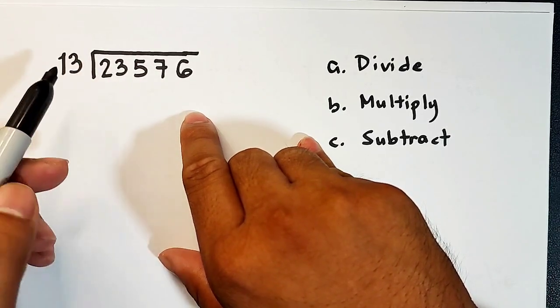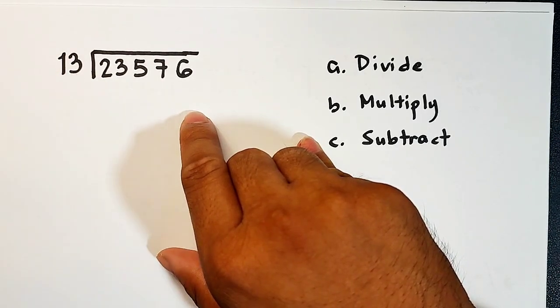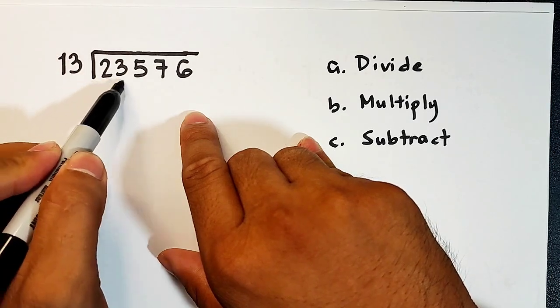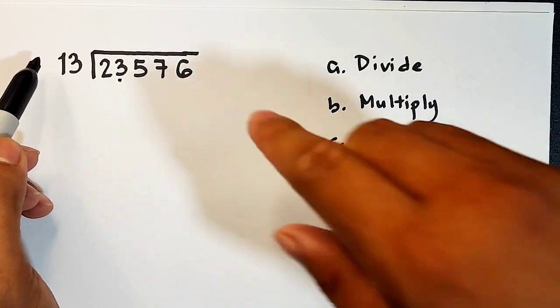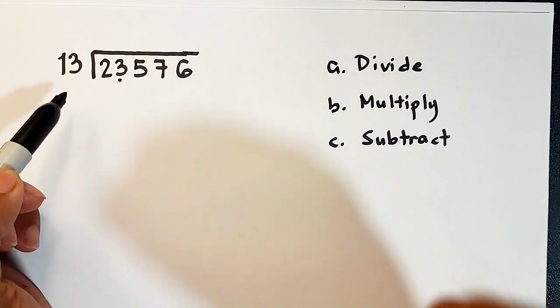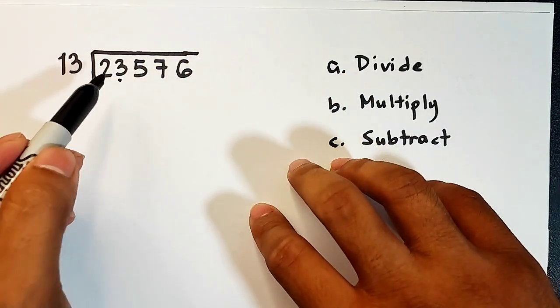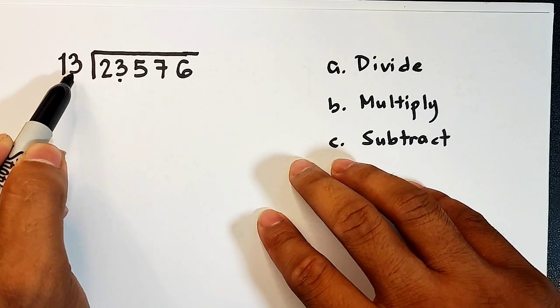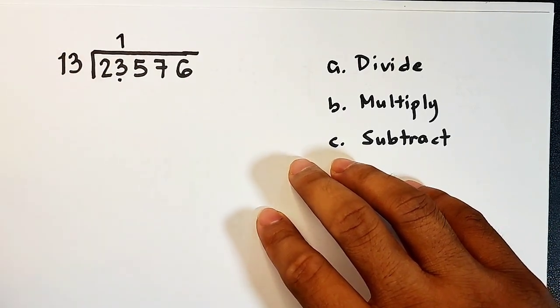Again, after 2 divided by 13, which is not possible, we will move with the two-digit number, which is 23 divided by 13. And the thing here is you need to estimate, you need to properly estimate your answer here. We have 23 divided by 13, and there's only one 13 inside 23.